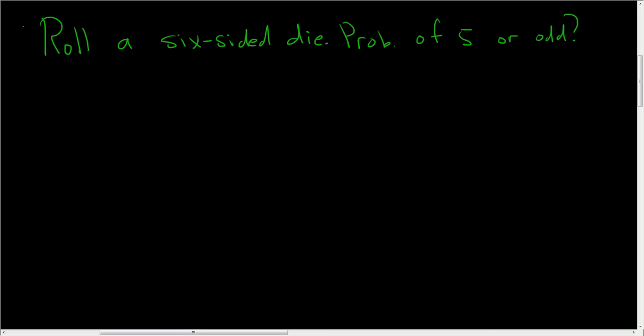So if you were to roll a six-sided die, what is the probability of seeing a five or an odd number? Solution: